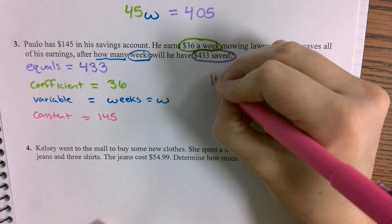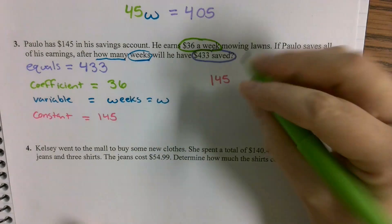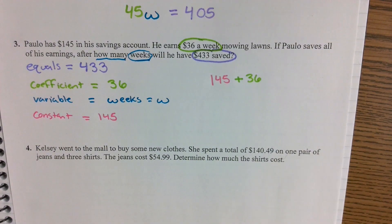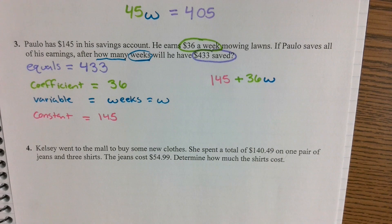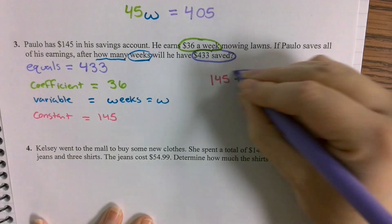So now we just set up the equation. He starts with $145 in the account. This is what he's starting with. Every week, he's going to add on another $36 for an unknown amount of weeks until he can get to $433 saved. That's what he's going to do. That's your equation.